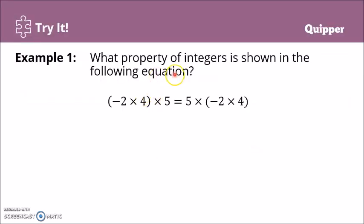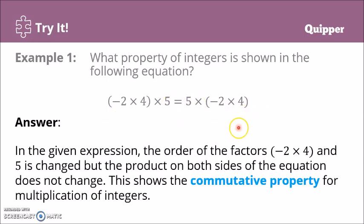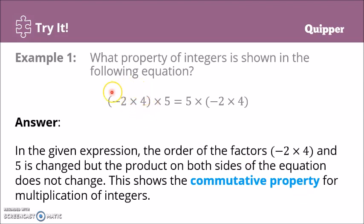Let's try this: what property of integers is shown in the equation negative 2 times 4 times 5 equals 5 times negative 2 times 4? In the given expression, the order of the factors has changed — nauna si negative 2 times 4, then sa kabila nagchange na ang nauna, yung 5, and nasa hulihan na si negative 2 times 4. Therefore, the property is the commutative property of multiplication.